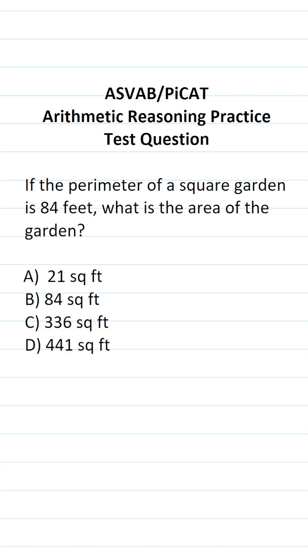So for this one, we know the perimeter of a square garden and we want to find its area. Again, on the ASVAB and PiCAT, you won't have a reference sheet or a calculator. So you do have to commit some of these formulas to memory.